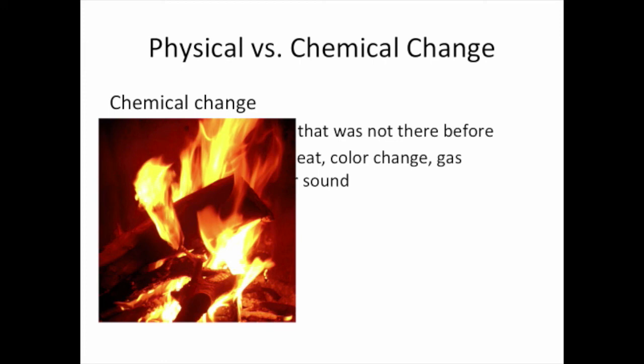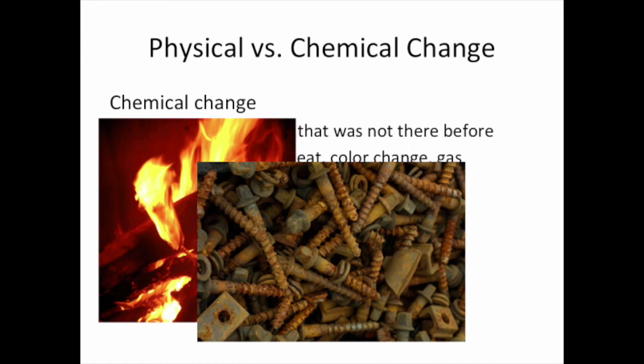We can also look at something like nails rusting. This is a chemical change. In the beginning, we have iron metal as an element, and after the chemical reaction of rusting, we have an iron oxide, which is a compound.